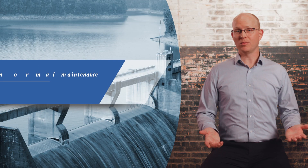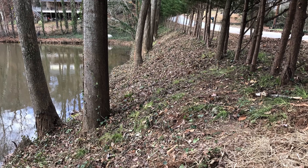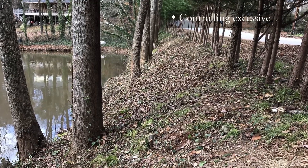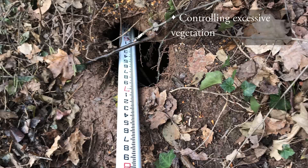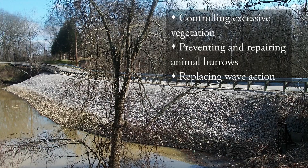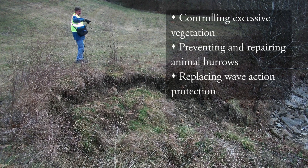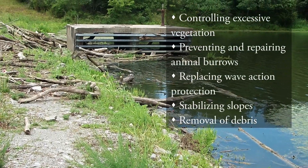What are normal maintenance activities? Normal maintenance activities include controlling excessive vegetation, preventing and repairing animal burrows, replacing upstream wave action protection such as riprap, stabilizing slopes, and removing debris from structures and outlets.